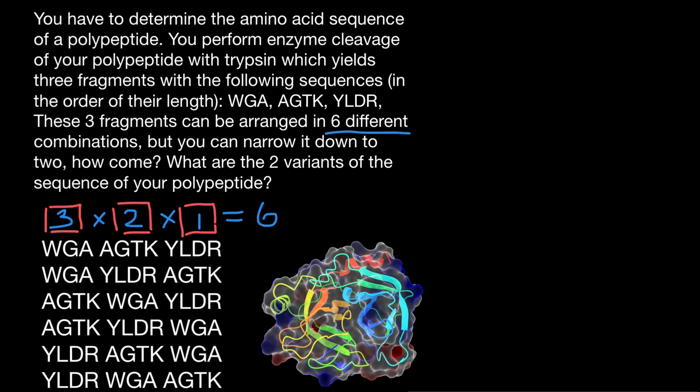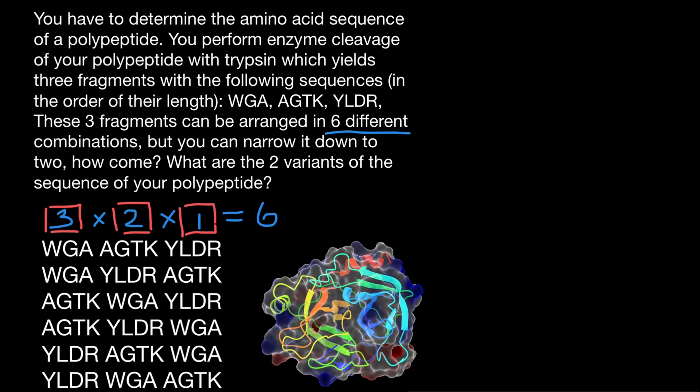And here's the list of the six combinations possible. According to our problem, we can narrow them down to only two variants out of these six, just knowing the information given in our problem.